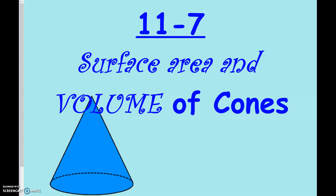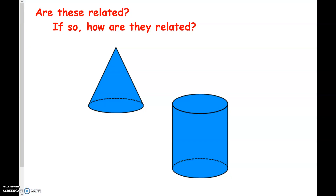Hello and welcome to 11.7 in the Big Ideas textbook series. For geometry, we are doing surface area and volume of cones. We've already talked about volume of prisms and pyramids, so kind of the same question here: with a cone and cylinder, how are they related?